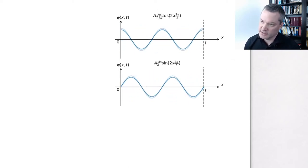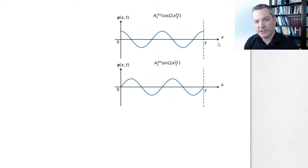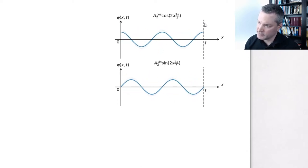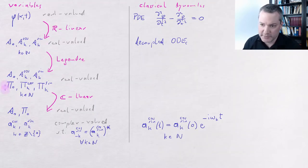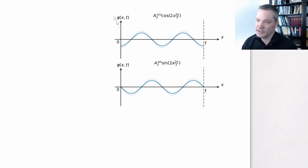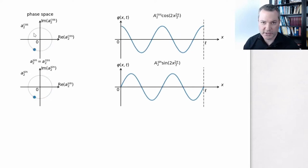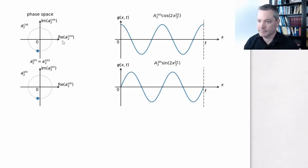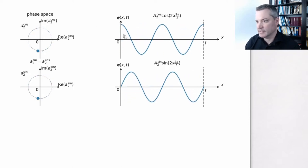The real valued Fourier modes correspond to standing wave oscillations of the field. Here we see the second cosine mode and the second sine mode. Recall that we defined our space dimension to be periodic, so the points in spacetime on one end of the line should be thought of as identified with the points on the other end. In the next step we moved to the phase space picture of the Hamiltonian formalism, which gave us the conjugate momentum variables. We found that the classical behavior of the modes corresponds to a very simple circular motion in phase space.